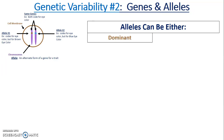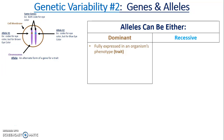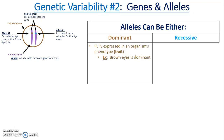Alleles can either be dominant or recessive. By dominant we mean that it will be fully expressed in an organism's phenotype — phenotype meaning trait. For example, brown eyes: if somebody has the allele for brown eyes, they're going to have brown eyes.